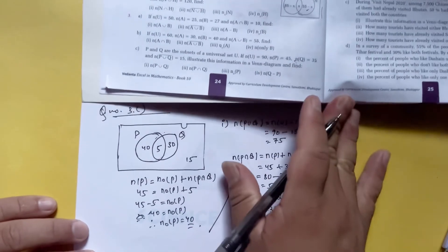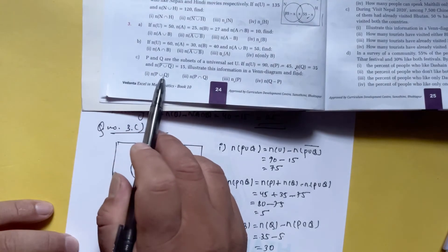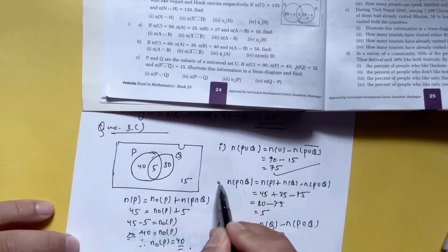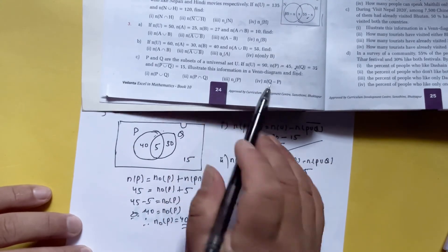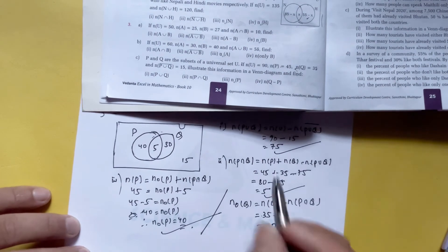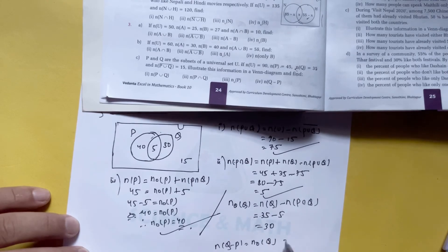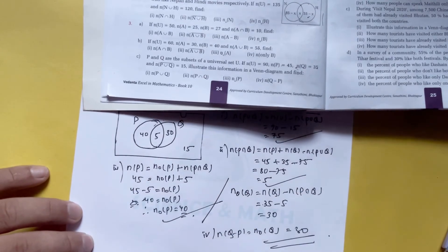So now we have found: NP union Q, NP intersection Q, N only P, and N only Q. The full diagram is solved and the answers are complete.